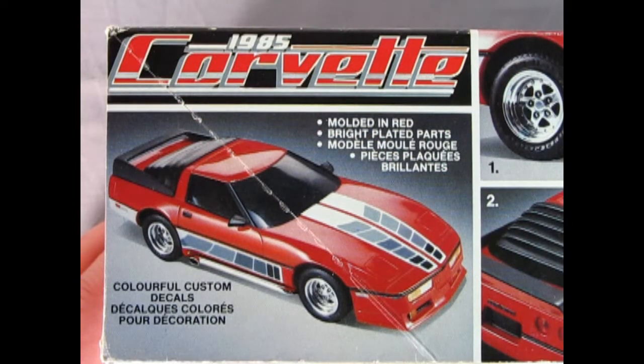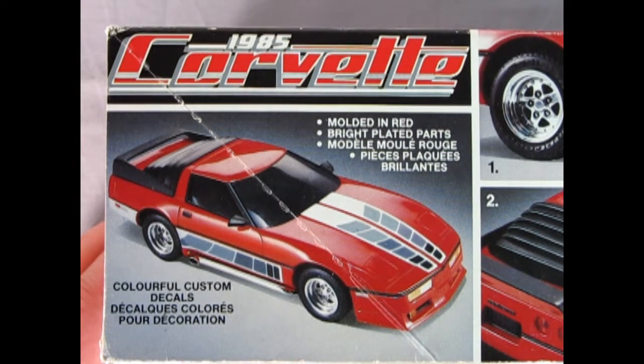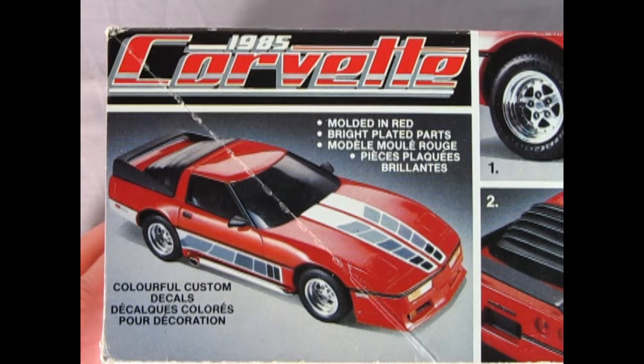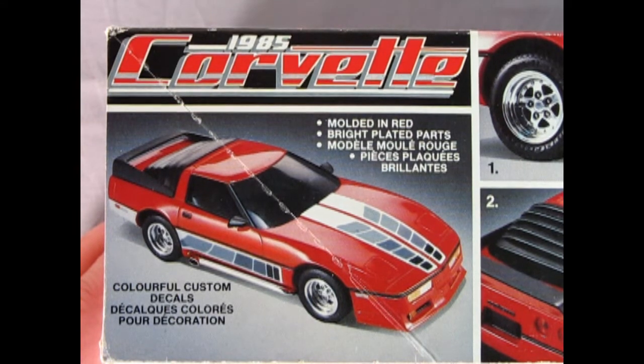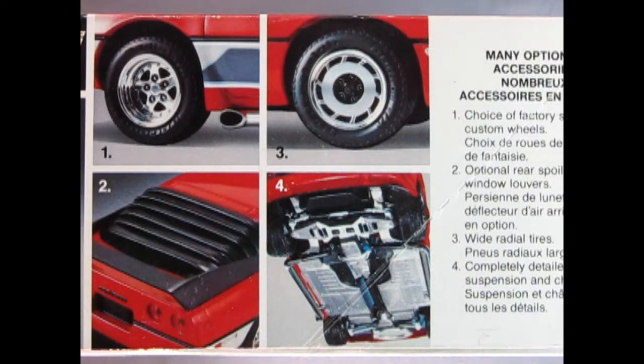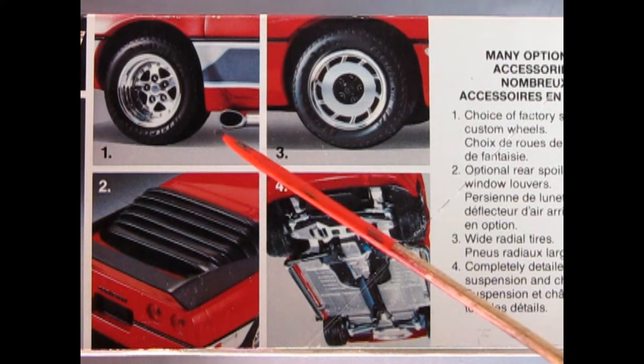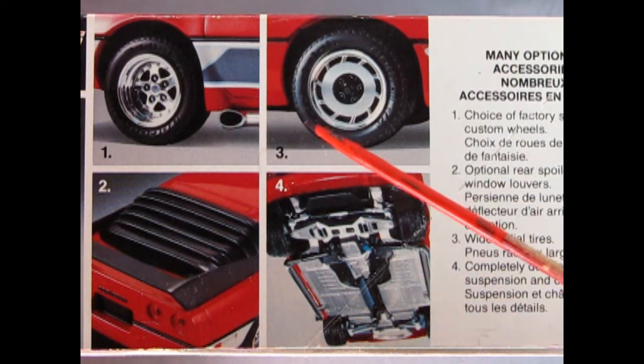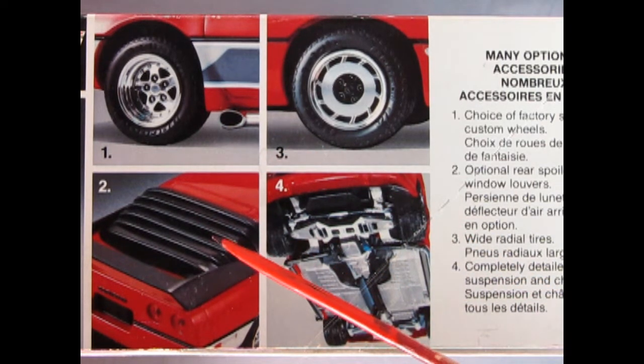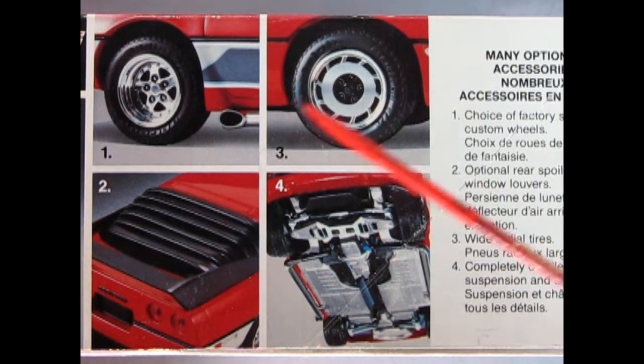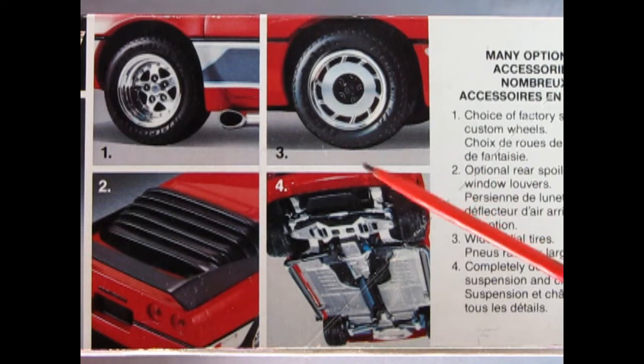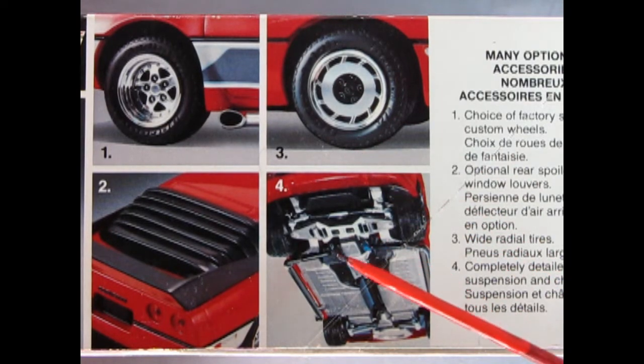As we look on the side of the box, we see they have both English and French on here. Our model kit is molded in red with bright plated parts and colorful custom decals. These are the many optional accessories you get in your kit. A choice of factory stock wheels or custom wheels, optional rear spoiler and window louvers, wide radial tires, and a completely detailed suspension and chassis.